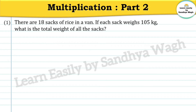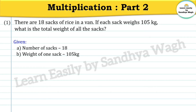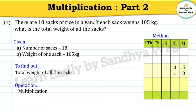Let's see the next example — this is a word problem. There are 18 sacks of rice in a van. If each sack weighs 105 kg, what is the total weight of all the sacks? We have to find the total weight of all the sacks, so we will do multiplication.